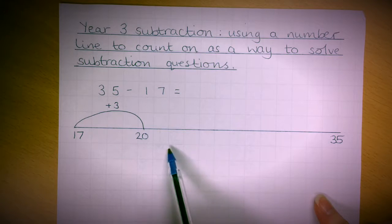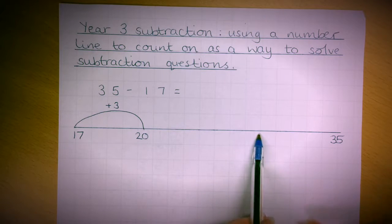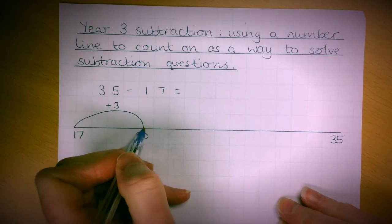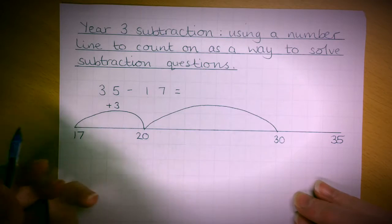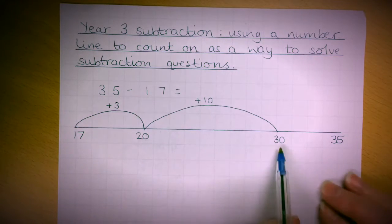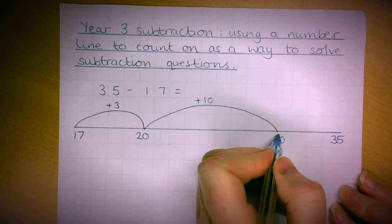The next easy number between 20 and 35 is I would probably add another 10 to take me up to 30. Then that leaves me to do a final jump of 5.